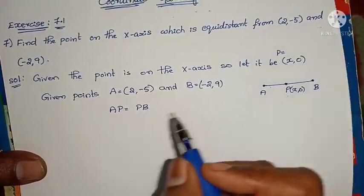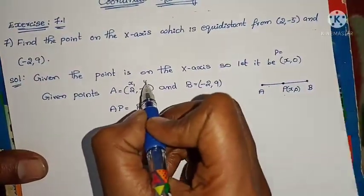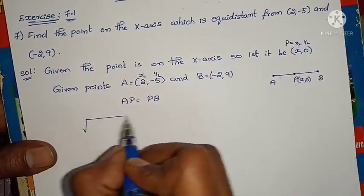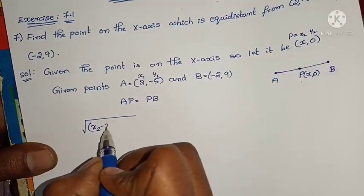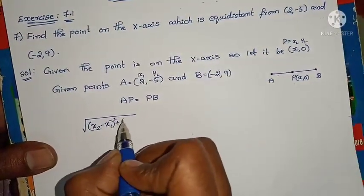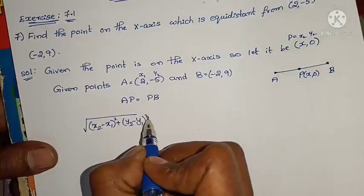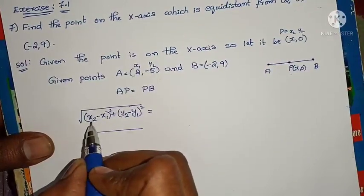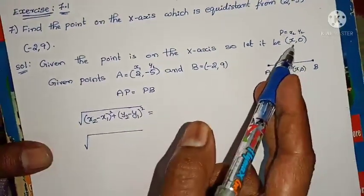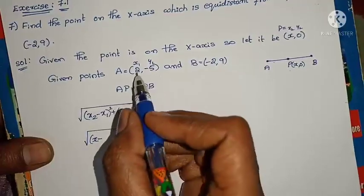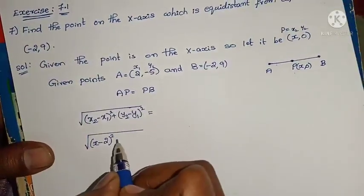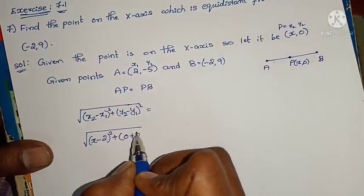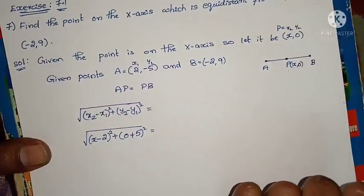Now take P as (x, 0) — that is x1, y1 — and A as x2, y2. What is the formula for distance? Root of (x2 minus x1) whole square plus (y2 minus y1) whole square. That is the formula. Applying it: root of (x minus 2) whole square plus (0 minus (-5)) whole square.